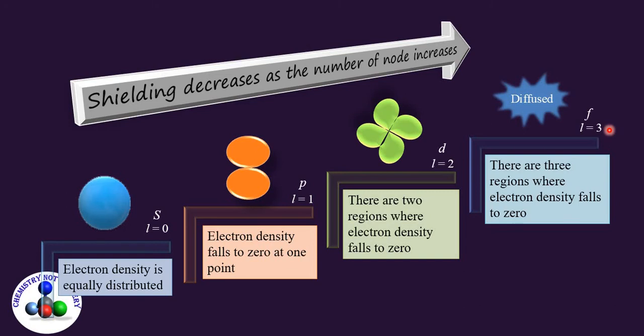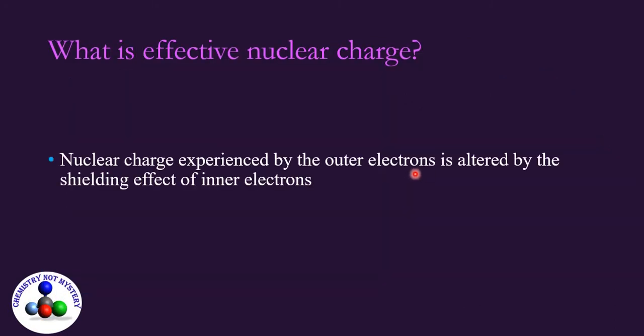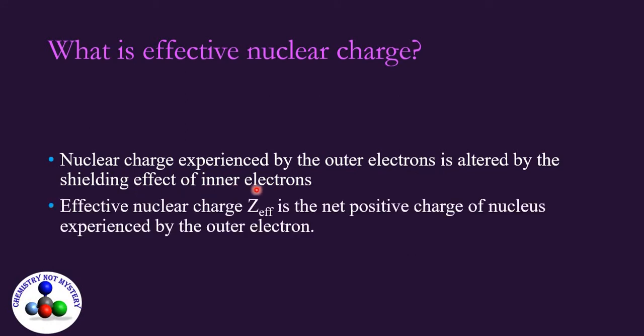Now you can understand that the shielding of inner orbitals of the nucleus alter the nuclear charge experienced by the outer electrons. This altered nuclear charge is also called the effective nuclear charge. Z effective is the net positive charge of the nucleus experienced by the outer electrons.